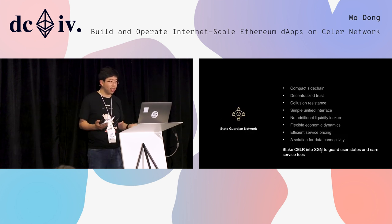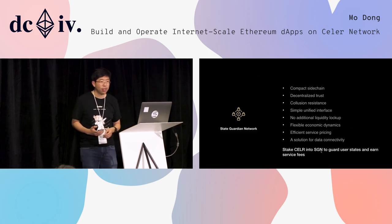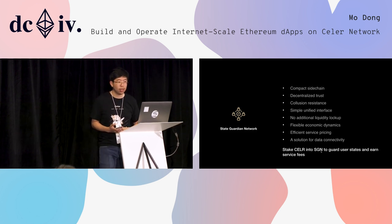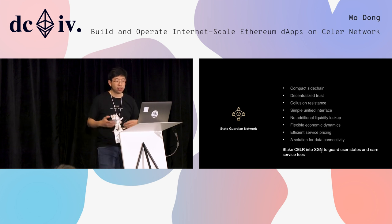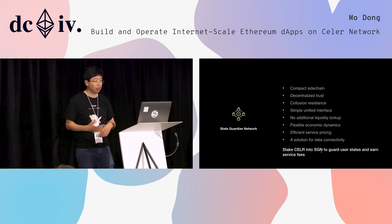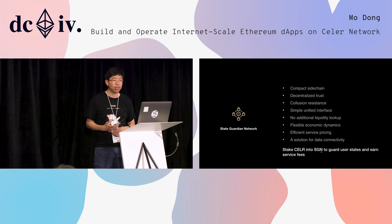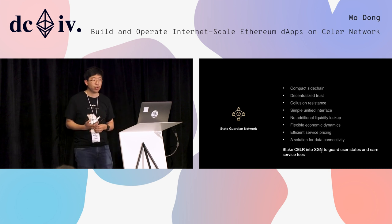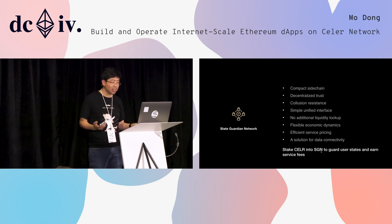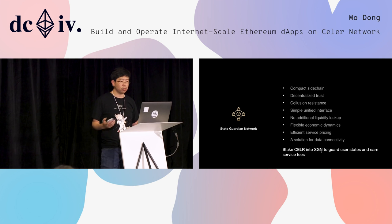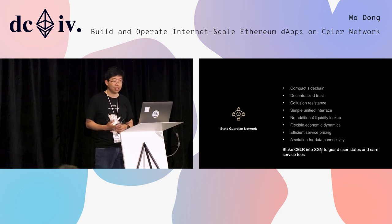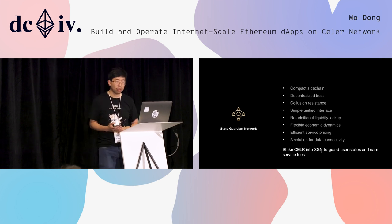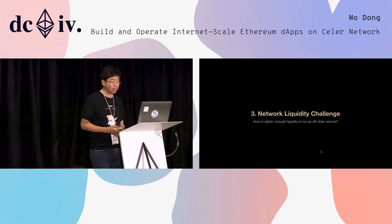The State Guardian Network is a compact sidechain that creates decentralized trust, has collusion resistance, exposes a very simple unified interface, requires no additional liquidity lockup, creates a flexible economic dynamic for pricing and insurance of your state, and is piggybacked with a solution for data connectivity. You stake Celer token into the State Guardian Network and earn service fees.